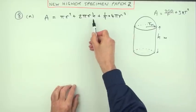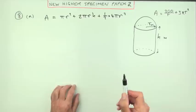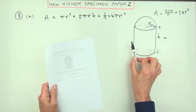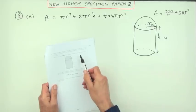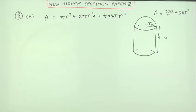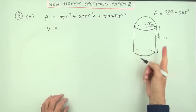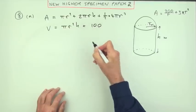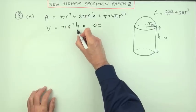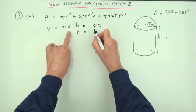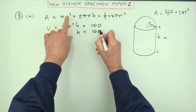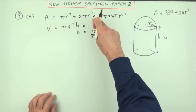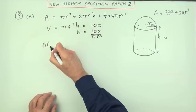Problem here: there's two variables, R and H. That's why in the question it gives you a connection. It says the volume of the cylindrical part, apart from this hump at the top, is 100 cubic meters. So the volume of the cylindrical part, pi R squared H, equals 100. Which means you can rearrange that to get H in terms of R: H equals 100 divided by pi R squared.